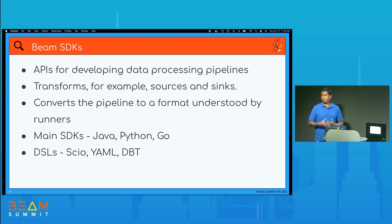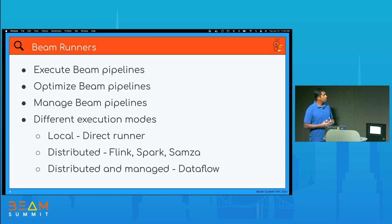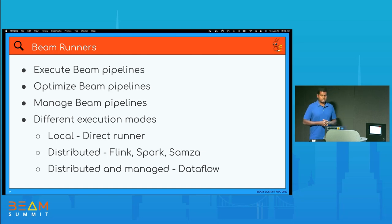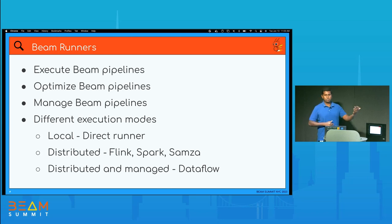We also have support for a number of DSLs, like Scio, YAML, and TBT. Beam also supports a number of runners. One of the tasks runners do is optimizing the execution of Beam pipelines. When you submit the pipeline to the runner, it may optimize it in certain ways, and it's also responsible for executing your Beam pipeline. Runners will manage your pipeline and give you management features, like a UI to view your job and metrics.